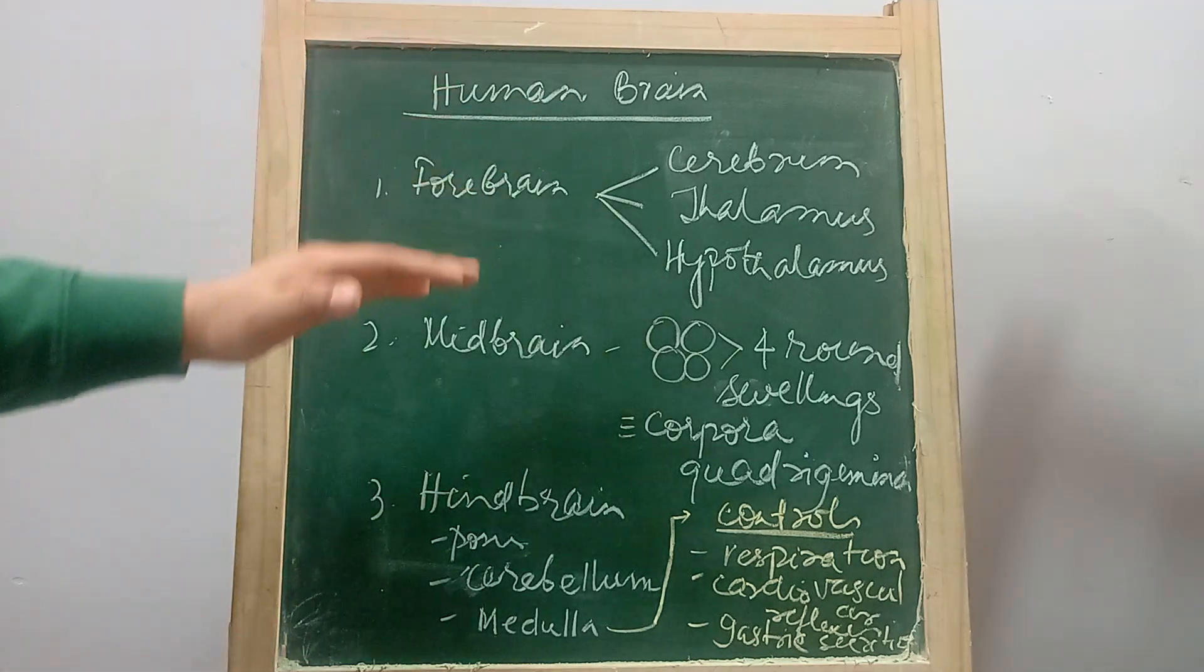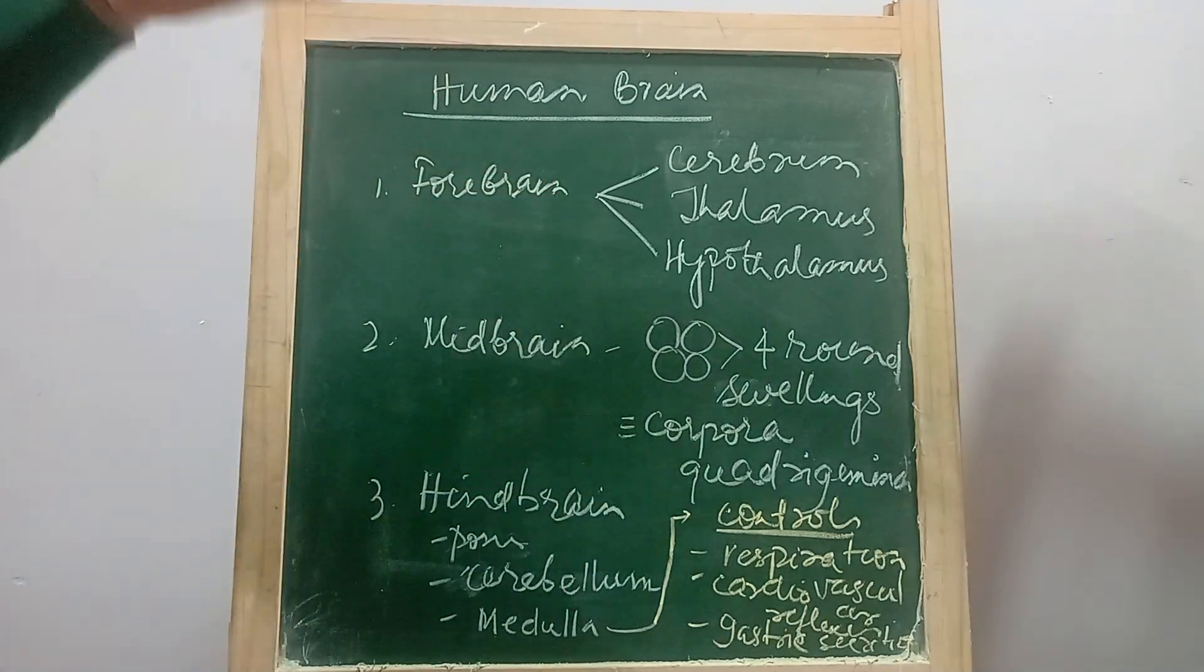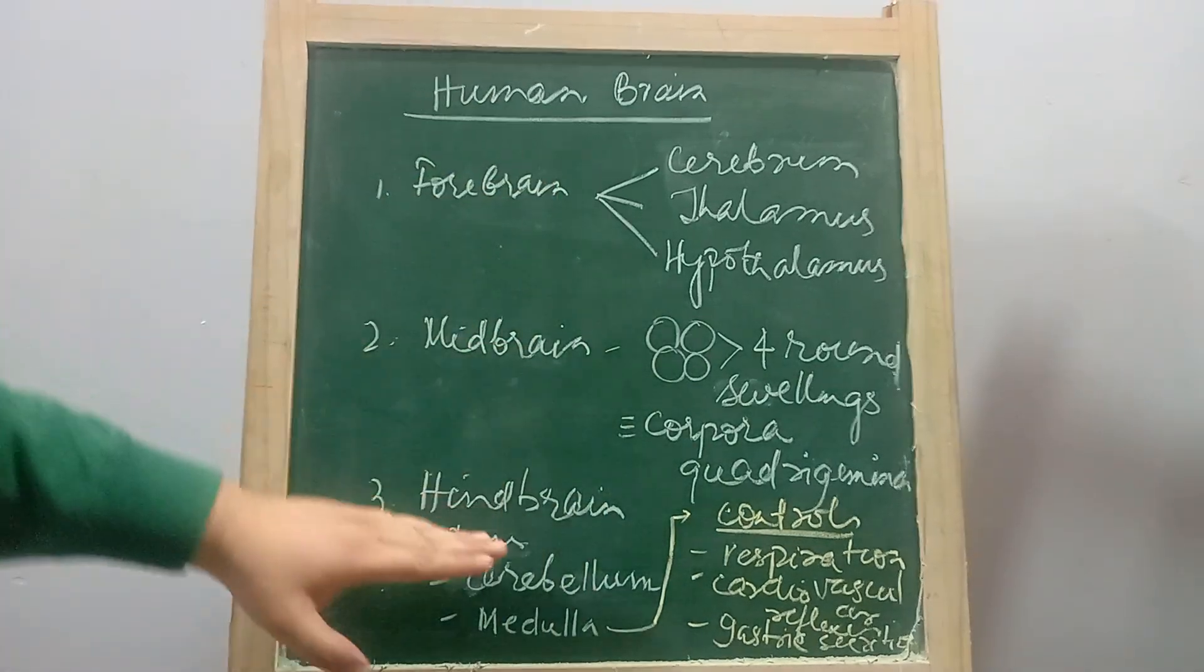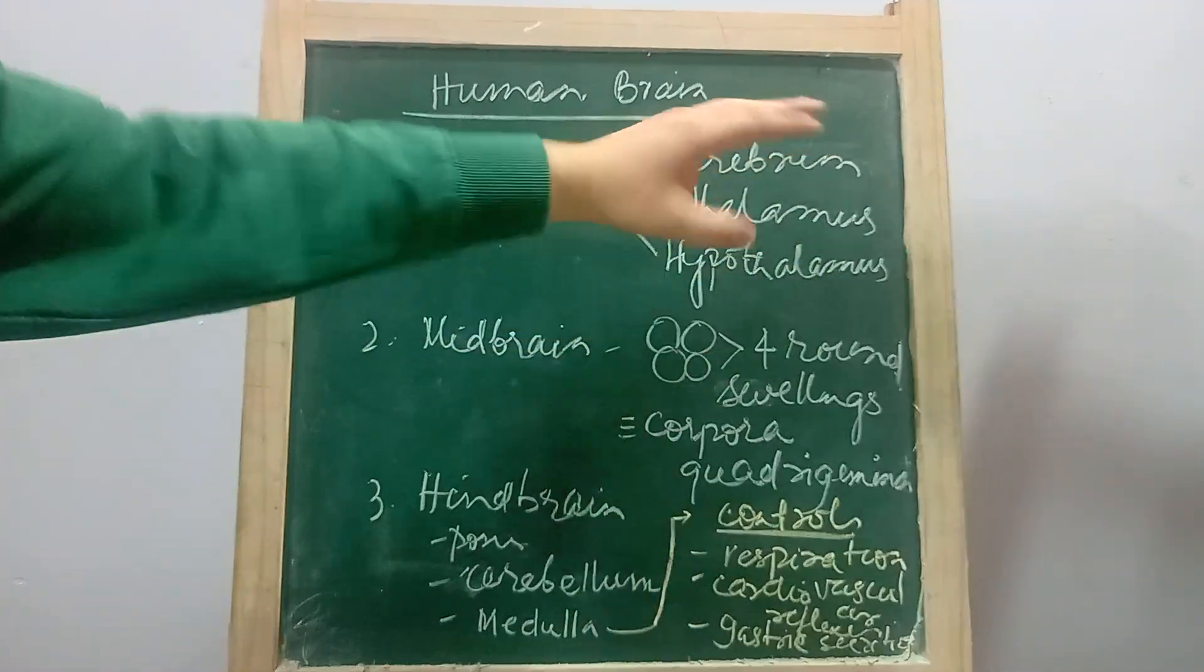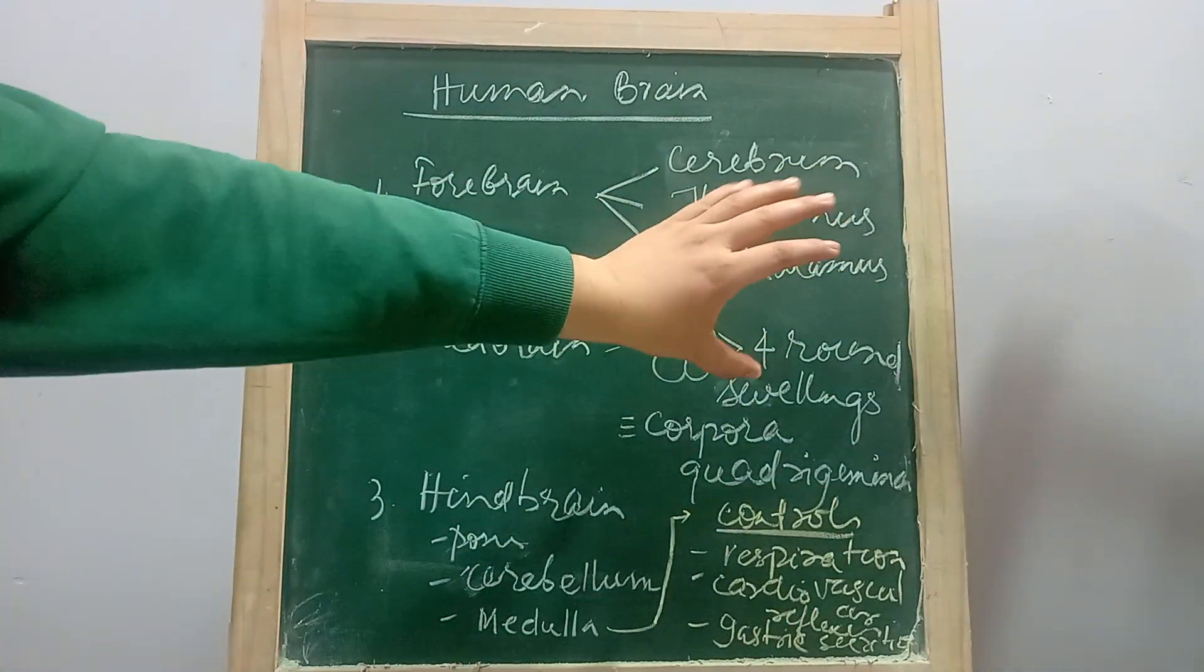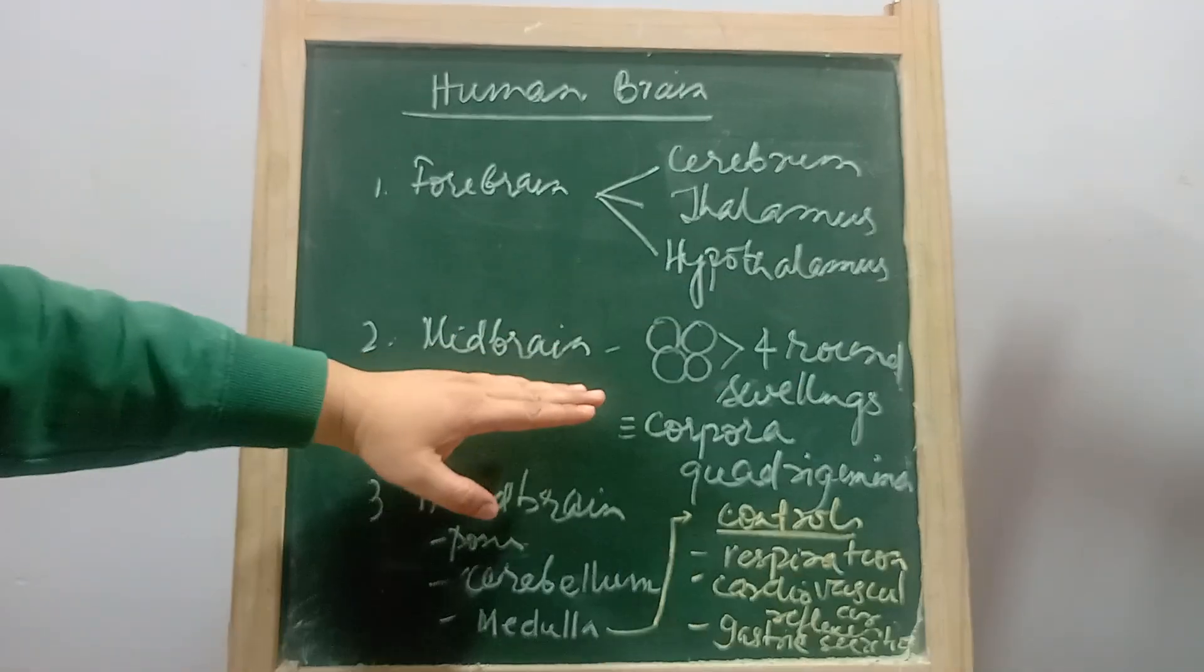The human brain is divided basically into three parts: forebrain, the front part, midbrain, and hindbrain. The forebrain is again divided into three parts: cerebrum on top, then comes a small thalamus, and below that is hypothalamus.